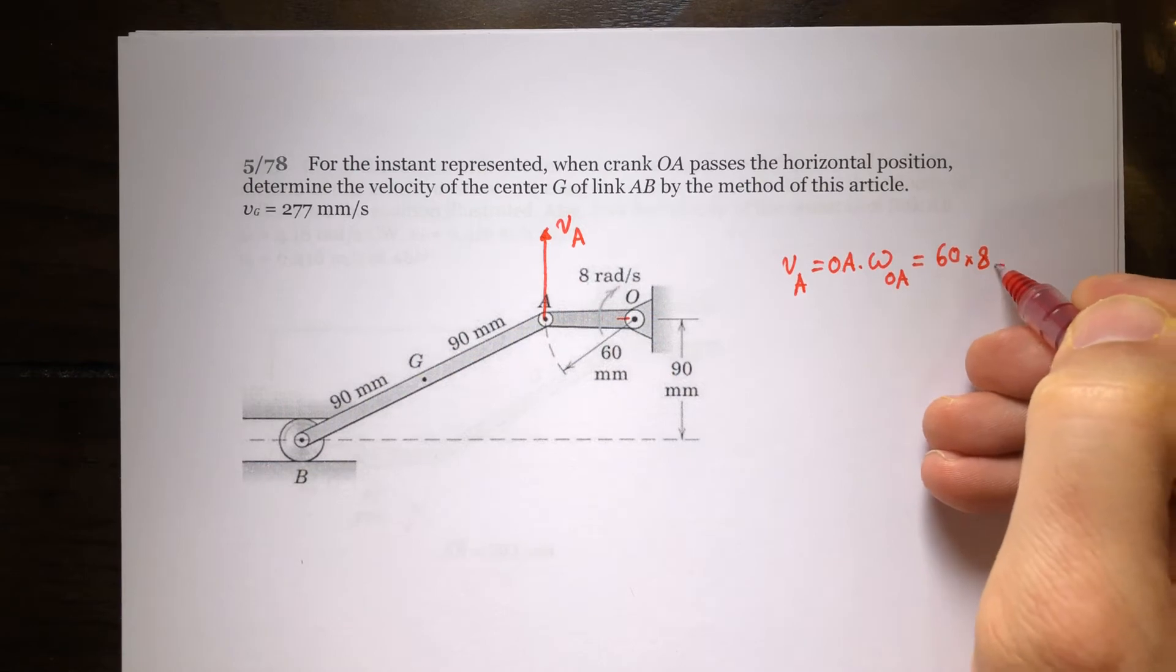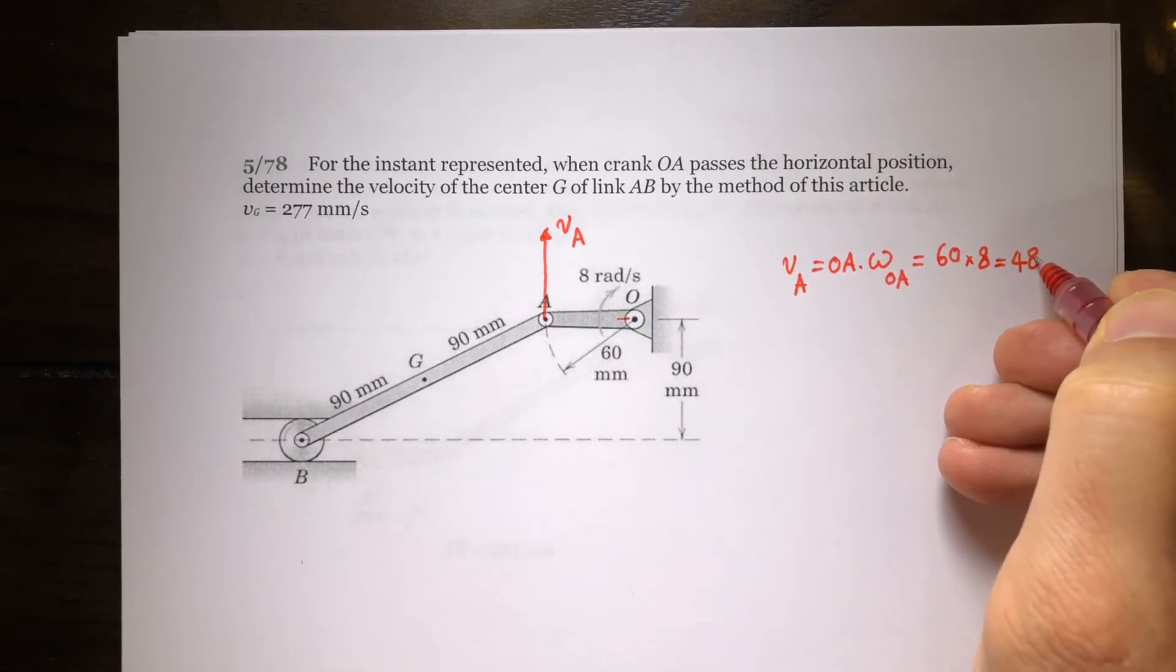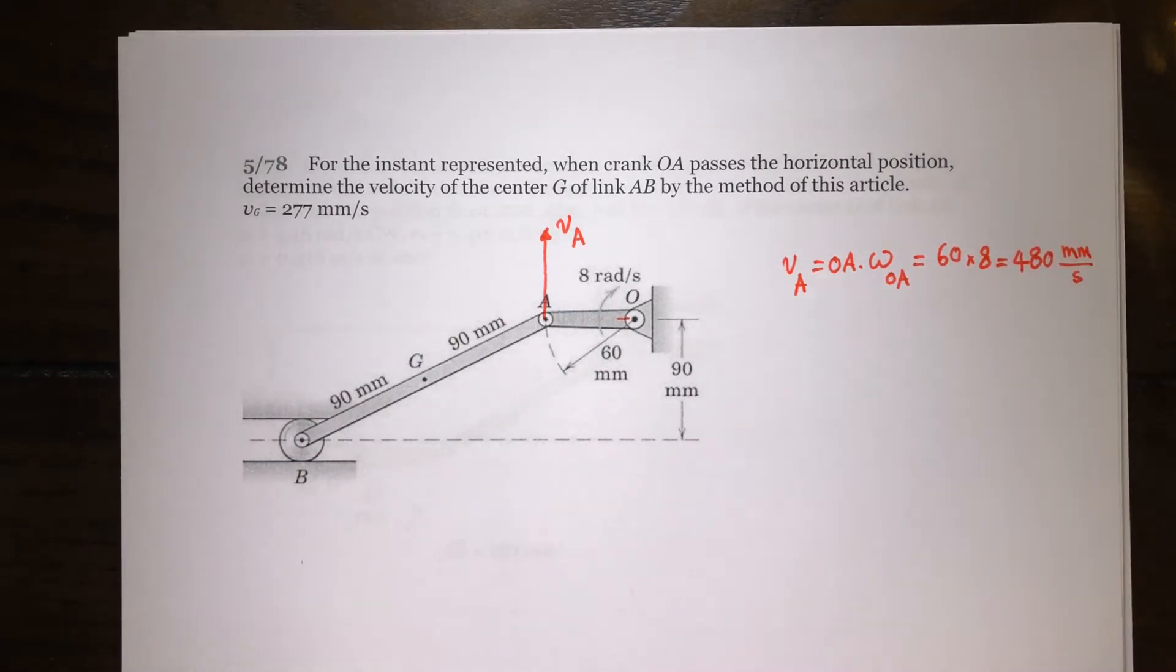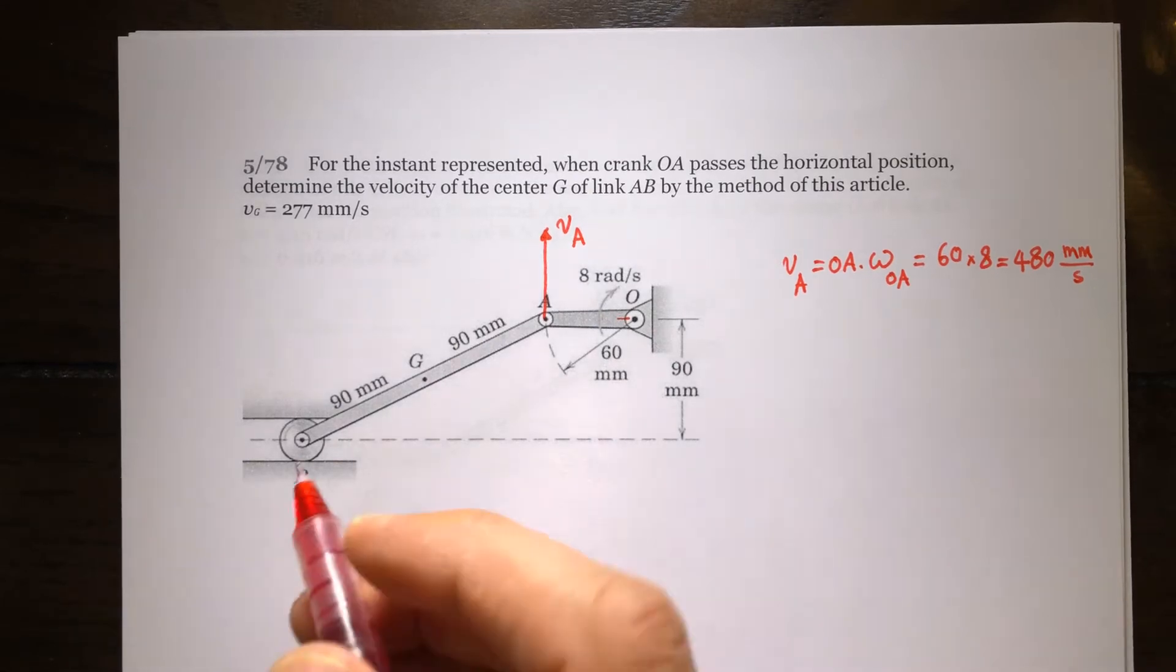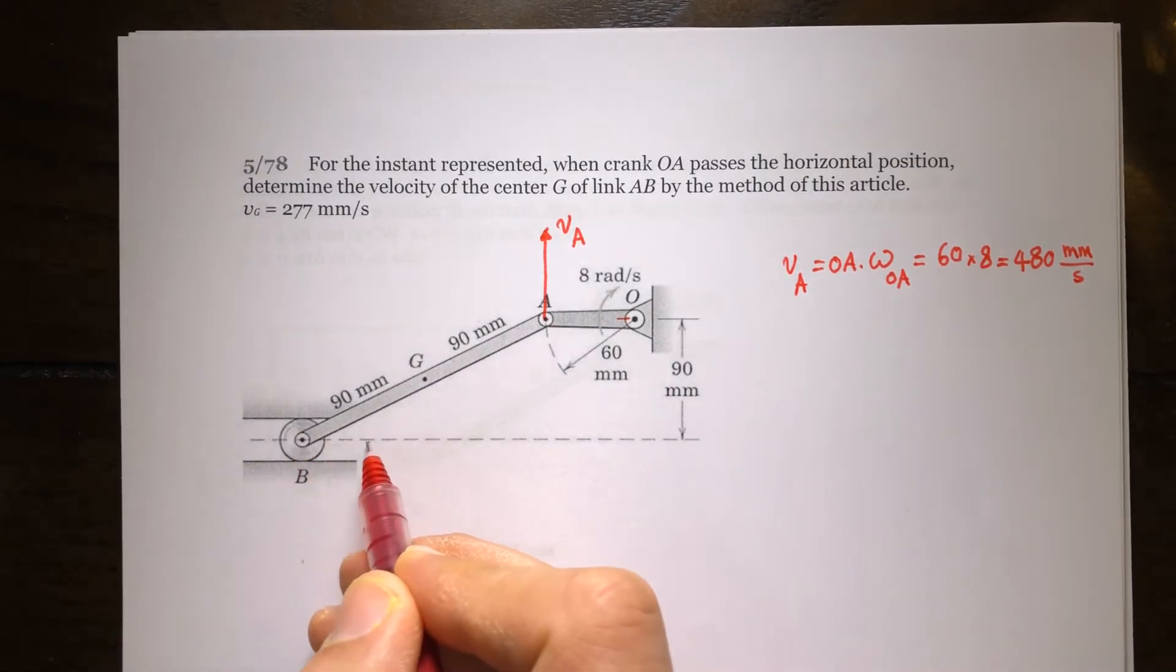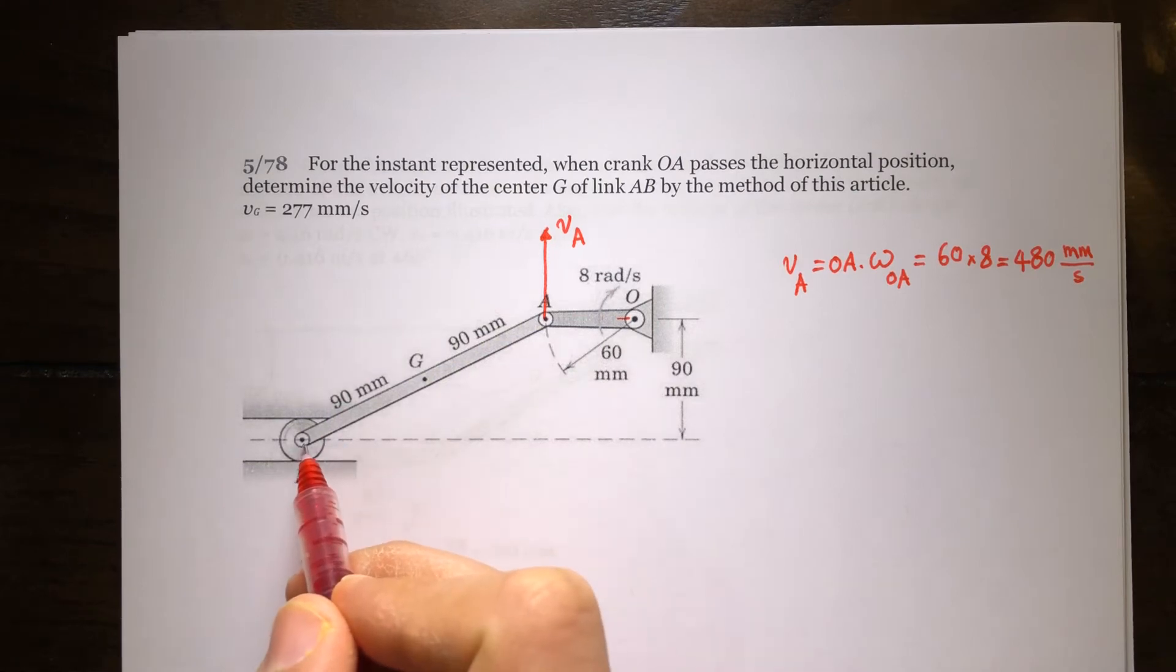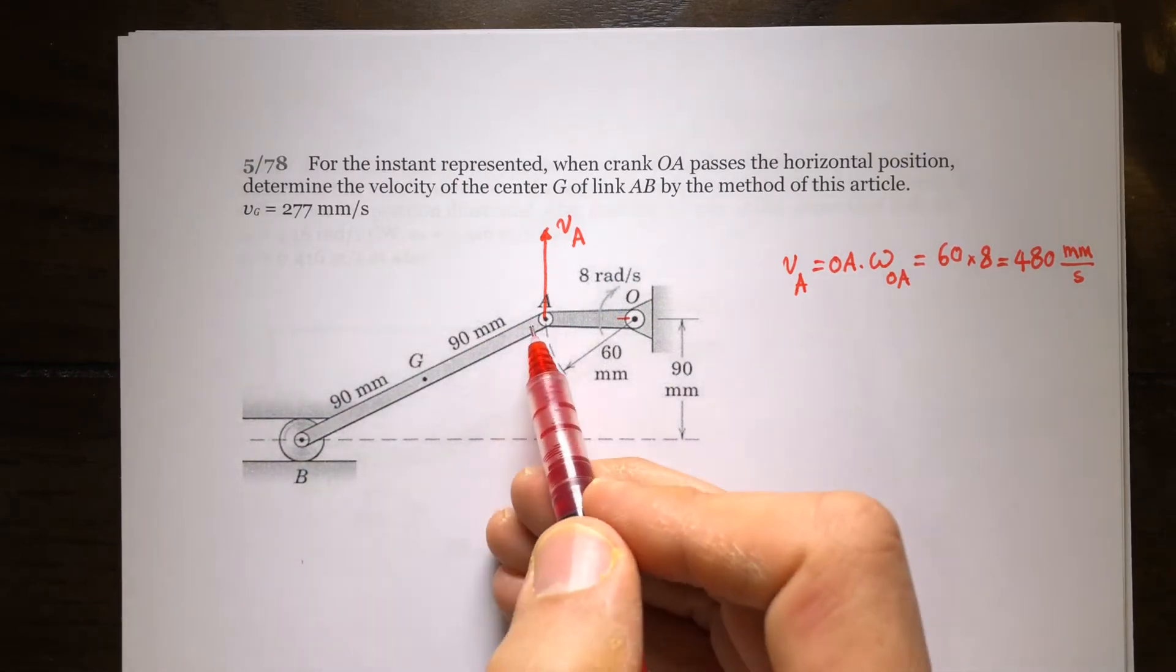What else do we know? We know velocity of B should be in the horizontal direction, this way or the other way. Because the problem is simple, you know it's going to go in this direction. But in general, let's say we don't know if it's going right or left, but we know it's going to be in the horizontal direction.